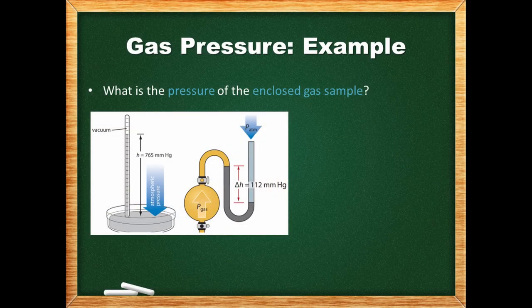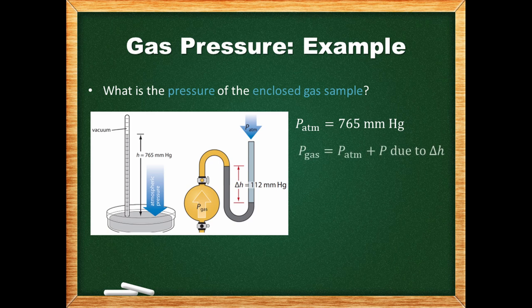Let's look at an example to illustrate how to make measurements using these devices. We want to determine the pressure of an enclosed gas sample using a manometer. This manometer is open to the atmosphere, but we aren't directly given the atmospheric pressure. However, we can determine it using the barometer shown on the left. Since the height of the mercury column is 765 millimeters, the atmospheric pressure is 765 millimeters mercury. Next, the height difference between the two mercury levels is 112 millimeters mercury. To get the pressure of the enclosed sample, we either add or subtract this difference from the atmospheric pressure.